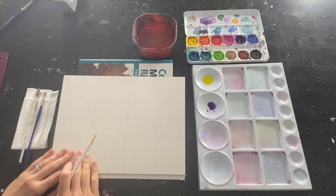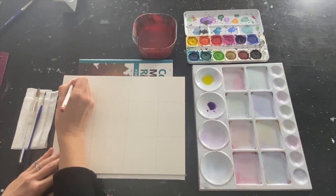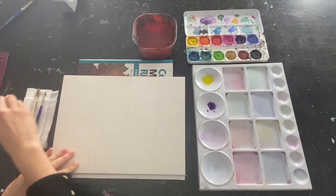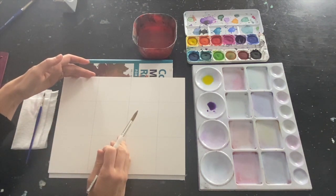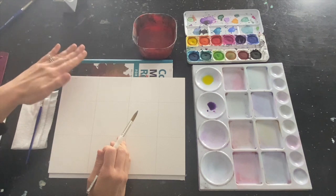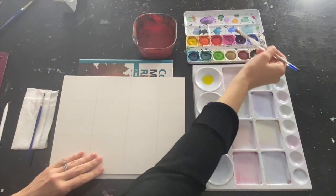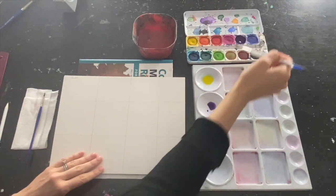Now the first wash that I'm going to teach you is called a flat wash, F L A T. The reason it's called a flat wash is it's going to be one shade of a color throughout. It's going to be flat. I'm going to use the purple and I'm going to load up my paint.